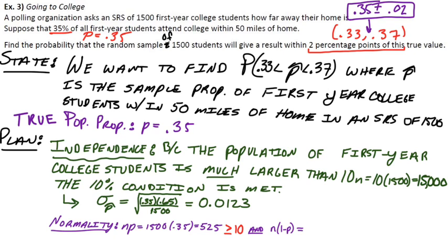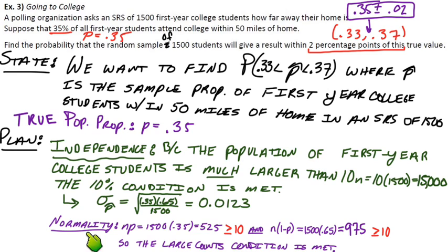And we have to check the other way also, so N times 1 minus P. So 1 minus P would be 0.65, which is definitely greater than or equal to 10. In fact, this is just 975. So we're safe on both counts. So we can say the large counts condition is definitely met. So we're good to consider this thing to be approximately normal.